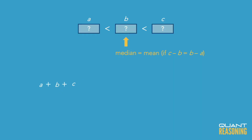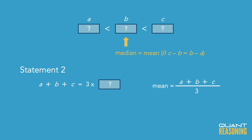Statement two is talking about the sum of the three terms. We know from the definition of mean that the mean is the ratio of the sum to the number of terms. There are three terms, and the statement is saying that the sum is equal to three multiplied by one of those terms. So from that definition of mean, if the sum equals the number of terms multiplied by one of those terms, that term has to be the mean.